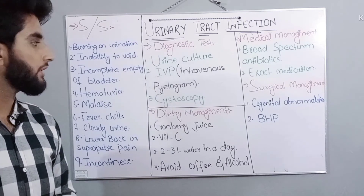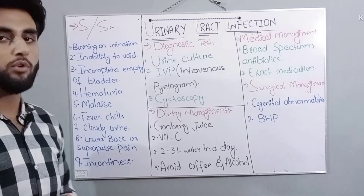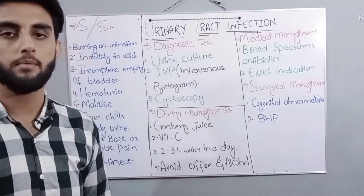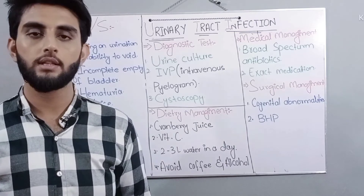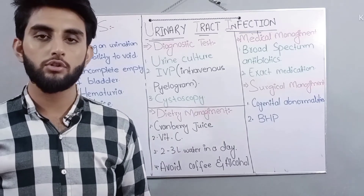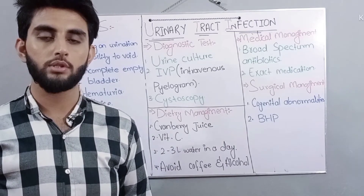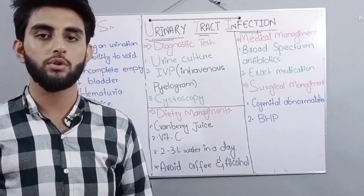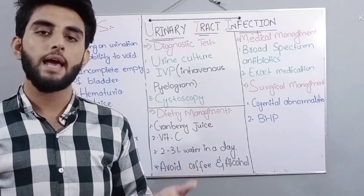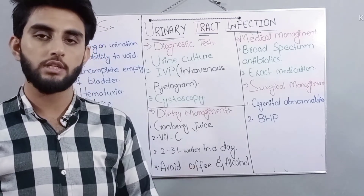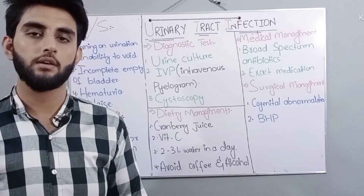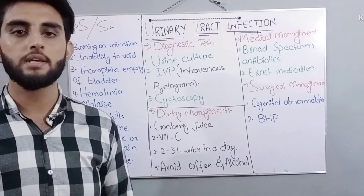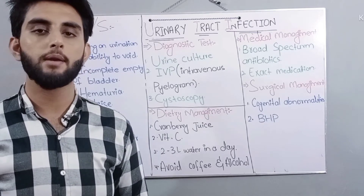For diagnostic tests, we perform a urine culture. After that, an intravenous pyelogram may be used — in which a water-soluble radio-opaque iodine medium is injected into the urinary tract so that we can see if any infection or abnormality is visible in the system.